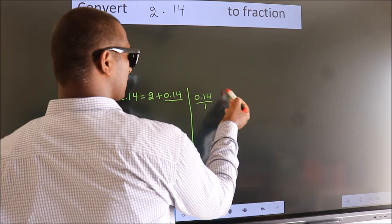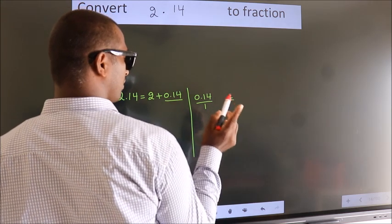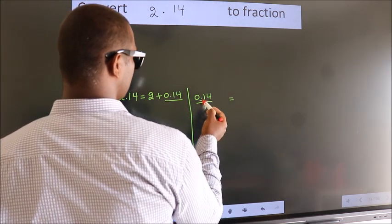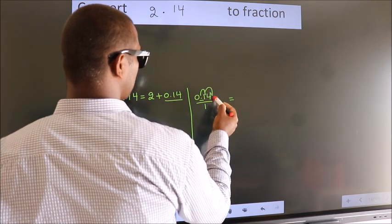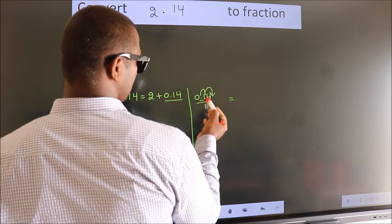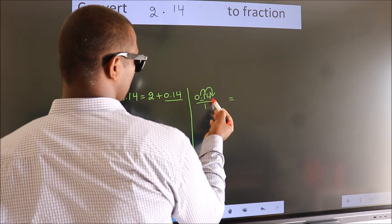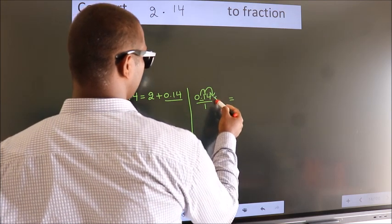To convert this to a fraction, we have to move this decimal after 2 numbers. To move this decimal after 2 numbers, multiply it with 100.